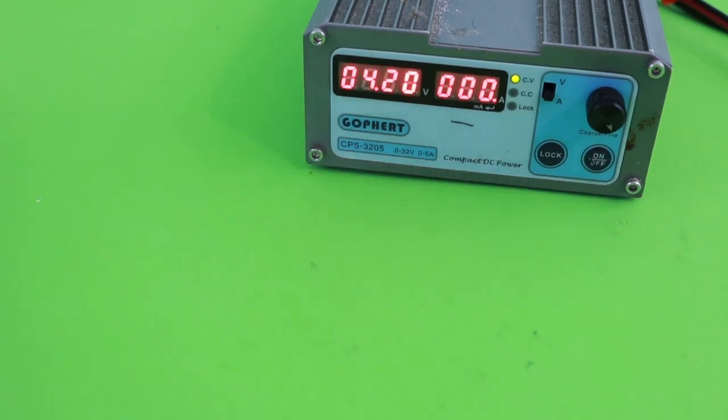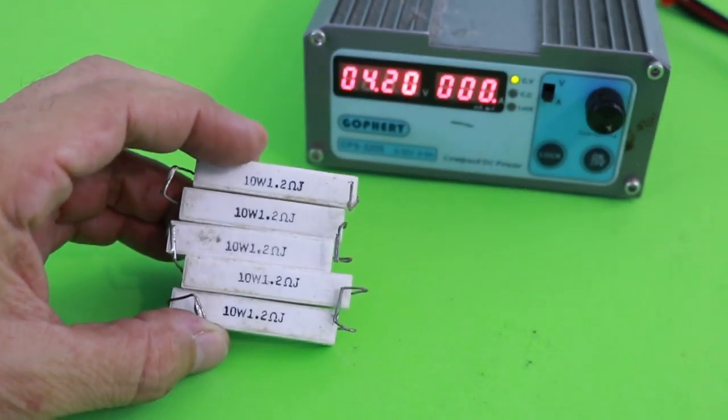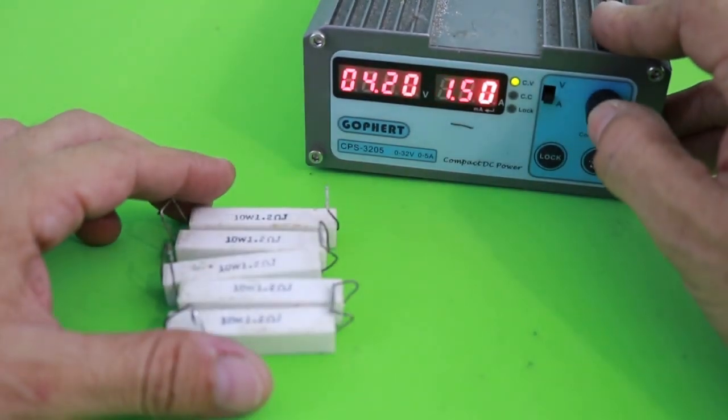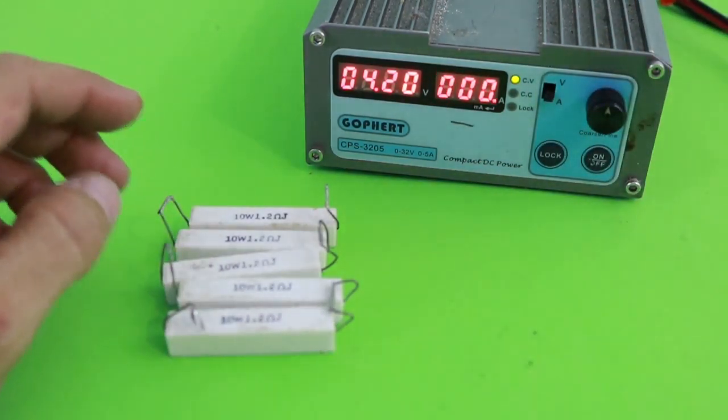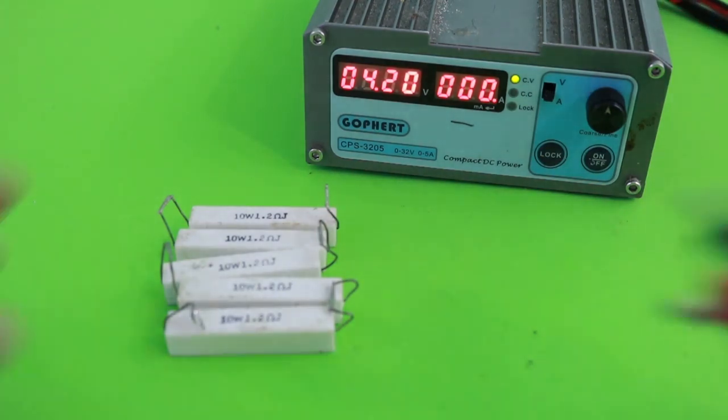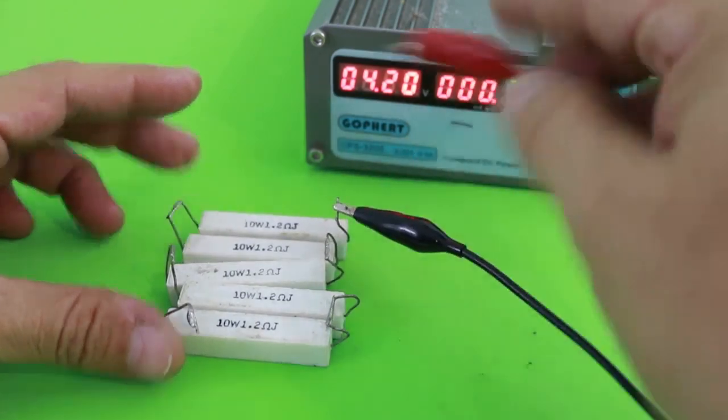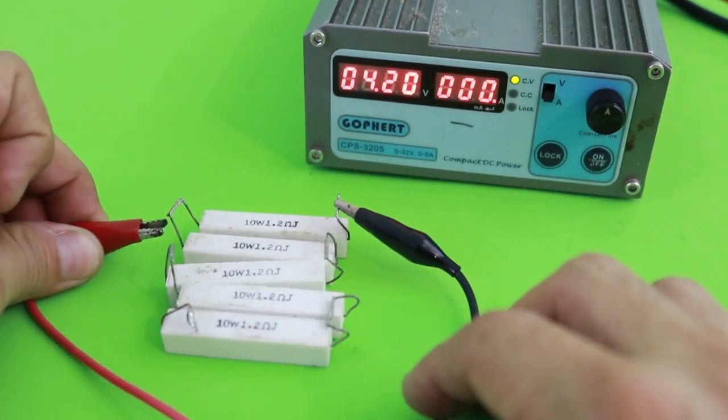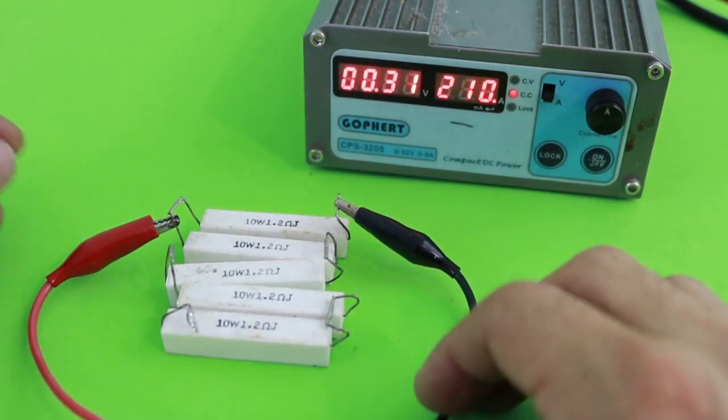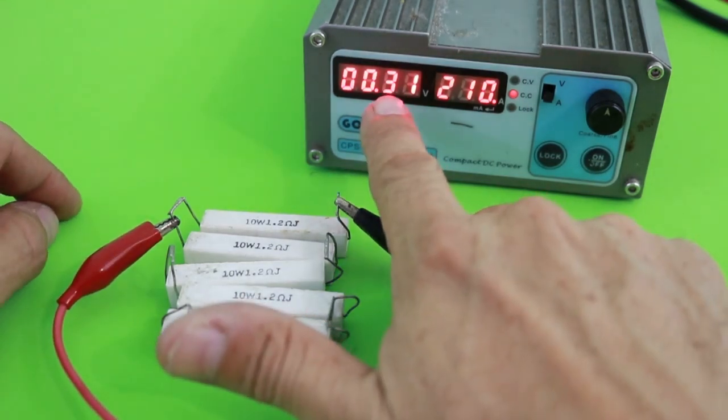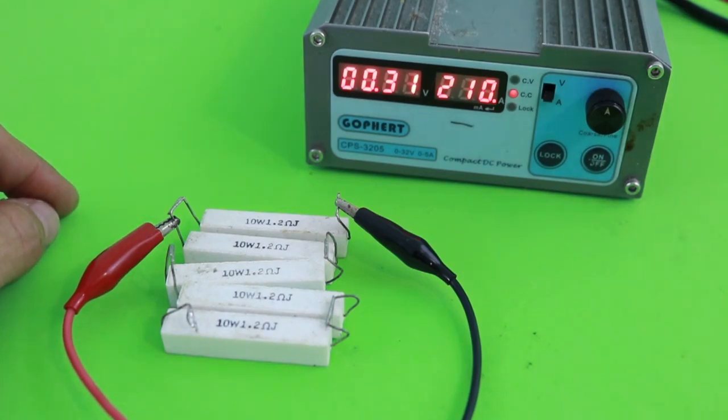Let me illustrate this using this chain of resistors in series. These are 1.2 ohm resistors but let me move the current to 200 milliamps in order for the resistors not to burn. So I will connect a single resistor. This is a low resistance equivalent to a non-charged battery. You can see how the voltage is very low and the current is limited to 200 milliamps.